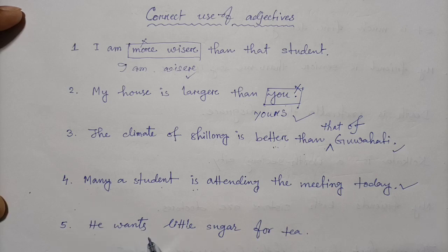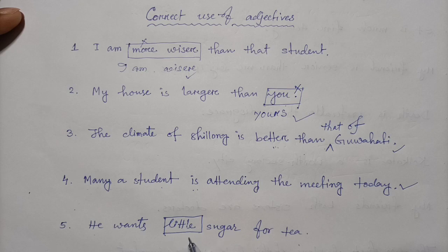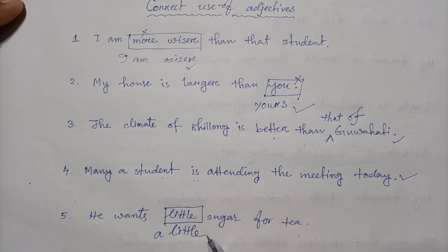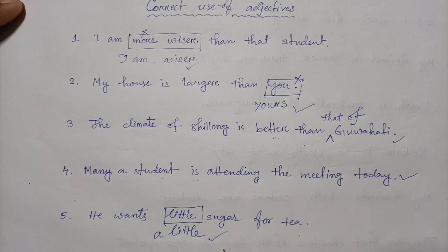Question five: 'He wants little sugar for tea.' The word 'a little' is a positive word, meaning some sugar. So the correct answer is 'a little' — 'He wants a little sugar for tea.'